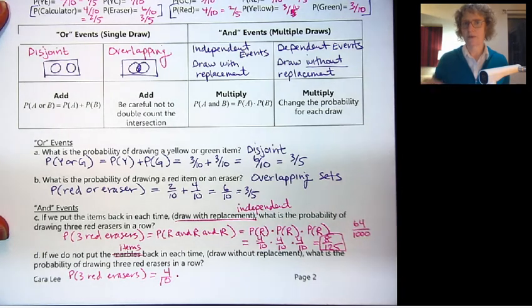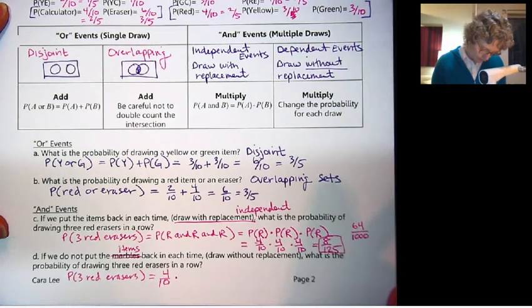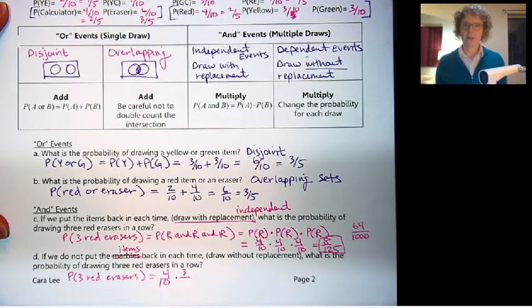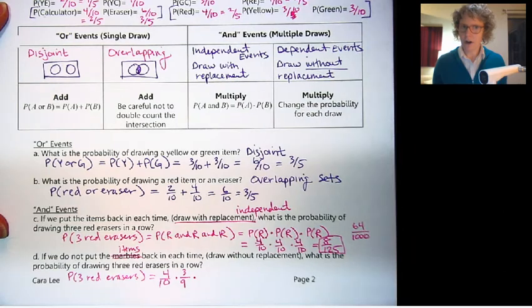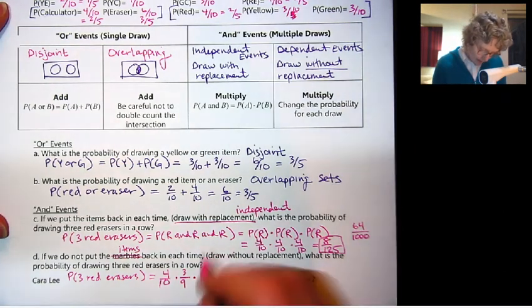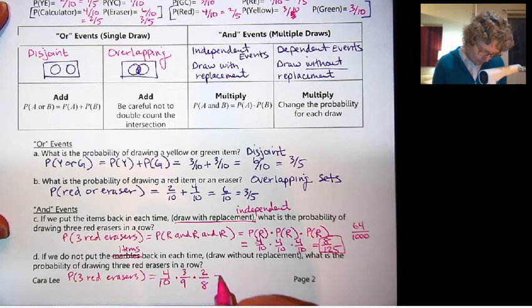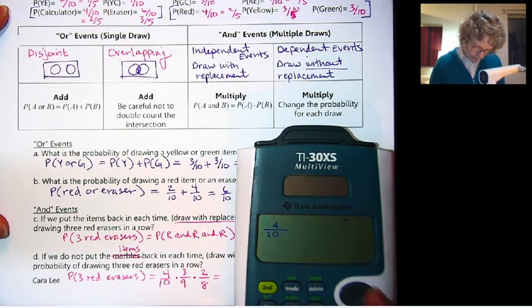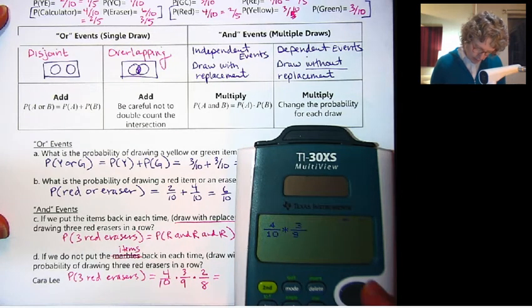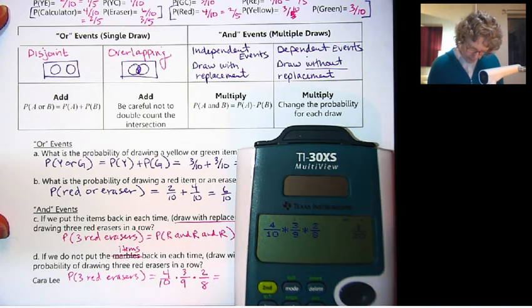Our probability is going to change each time. The first time, it's 4 out of 10. Because we have 4 erasers and 10 items. Now, one eraser is gone. So how many red erasers are left? Only 3. And how many items are left? Only 9. So it's 3 out of 9 now. Now, 2 red erasers are gone out of the bag. So there's only 2 left out of 8 items. Let's punch this one in.